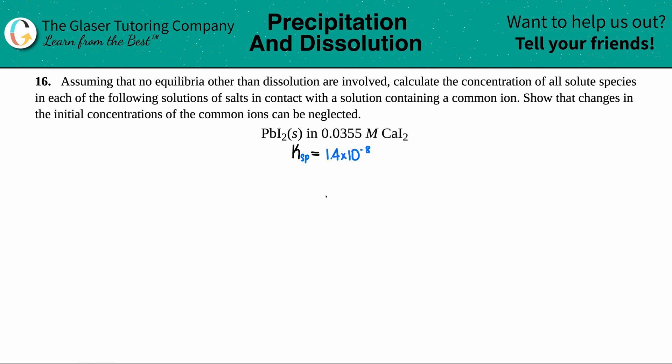Number 16: Assuming that no equilibria other than dissolution are involved, calculate the concentration of all solute species in each of the following solutions of salts in contact with the solution containing a common ion. Show that the changes in the initial concentrations of the common ions can be neglected. We have lead iodide, PbI₂ solid, in a solution of 0.0355 molarity of calcium iodide, CaI₂.